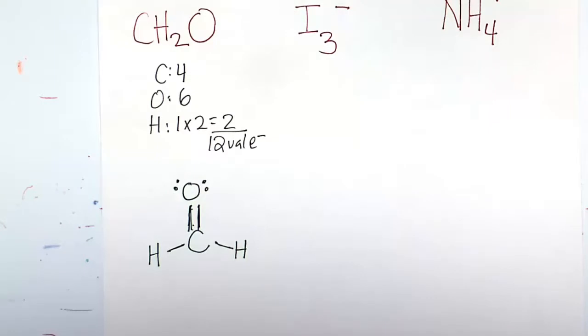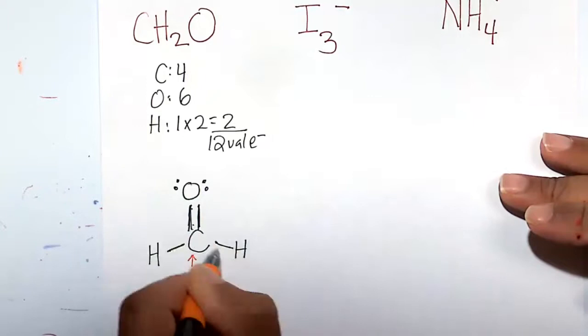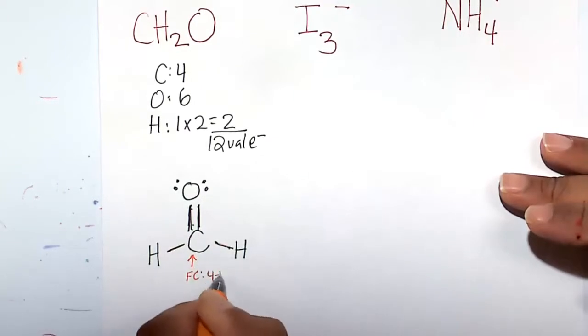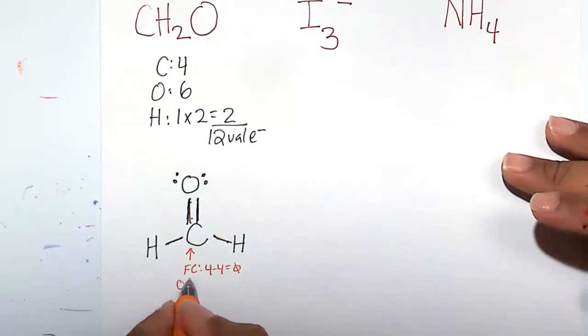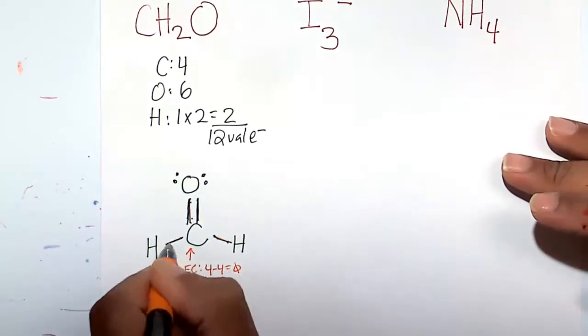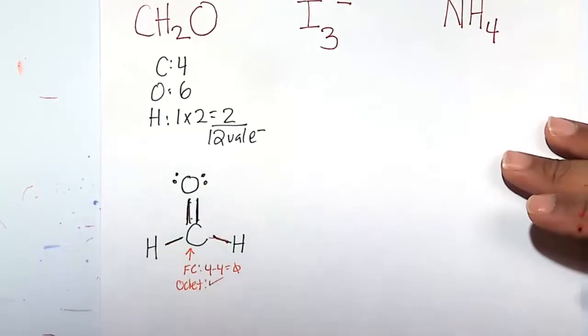Let's do some formal charge considerations here. Let's look at the central carbon atom. So formal charge, 1, 2, 3, 4. Carbon is happy at 4. 4 minus 4 is 0. Octet rule for carbon, 1, 2, 3, 4, 5, 6, 7, 8. So that's fine.